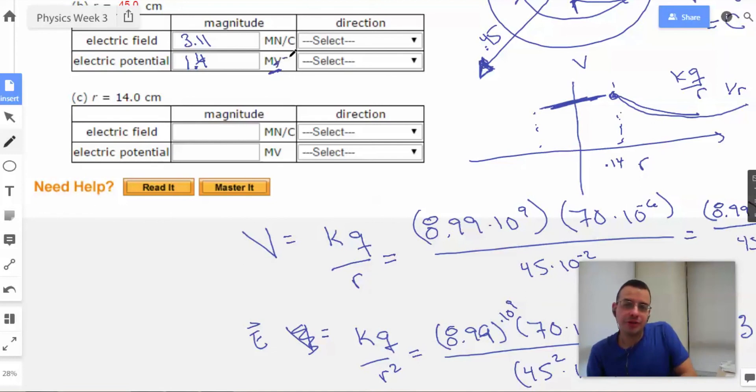So it would be 3.11 meganewtons per coulomb. I would really feel better if this was joules per coulomb. Just like electric field is newtons per coulomb, electric potential should be megajoules per coulomb or joules per coulomb.